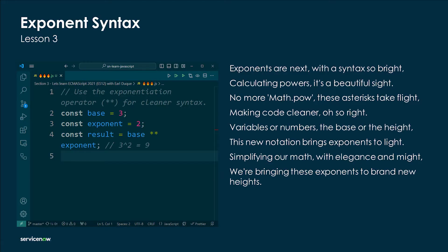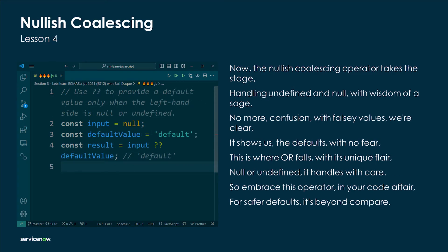The nullish coalescing operator takes the stage, handling undefined and null with wisdom of a sage. No more confusion with falsy values — it's clear, it shows the defaults with no fear. This is where OR falls with its unique flair; null or undefined it handles with care. So embrace this operator in your code, a fair and safer default — it's beyond compare.